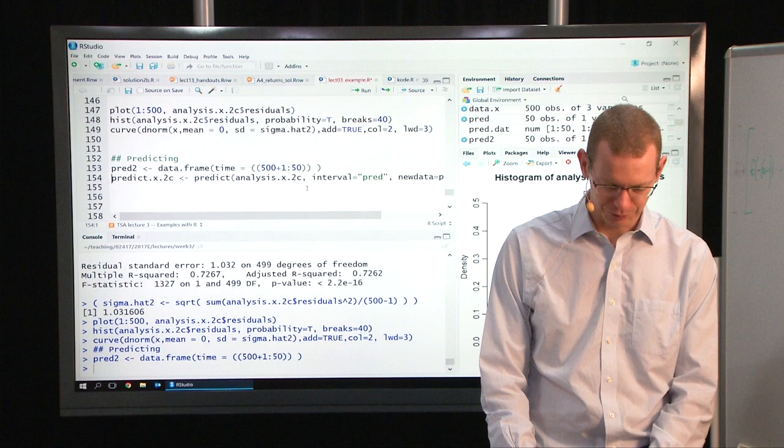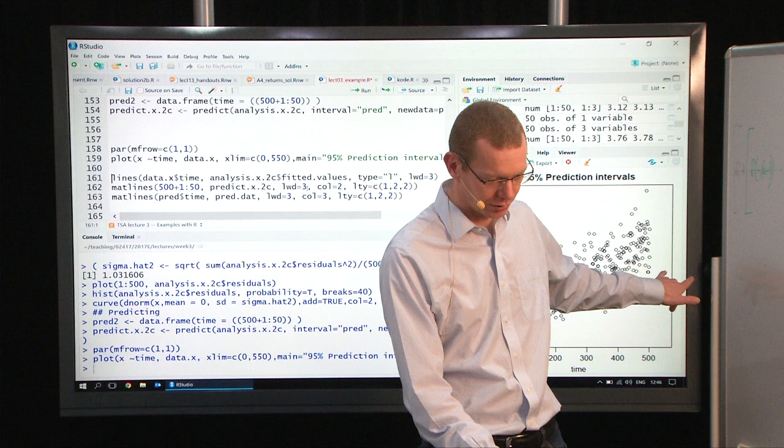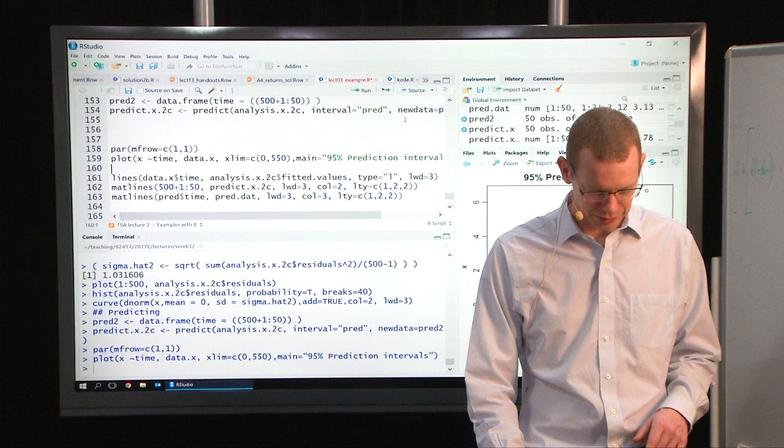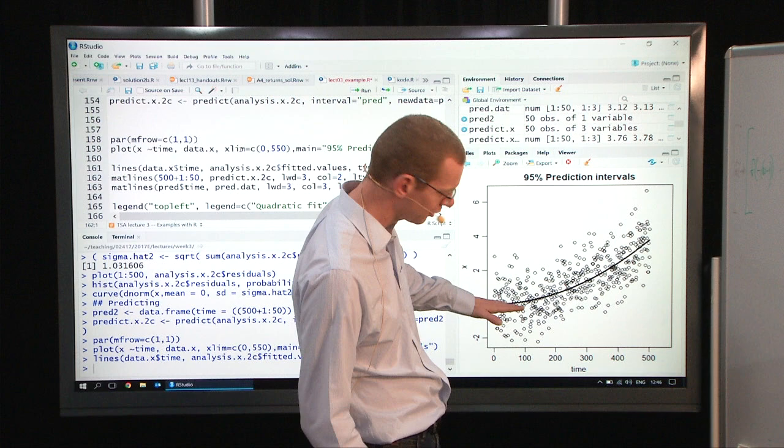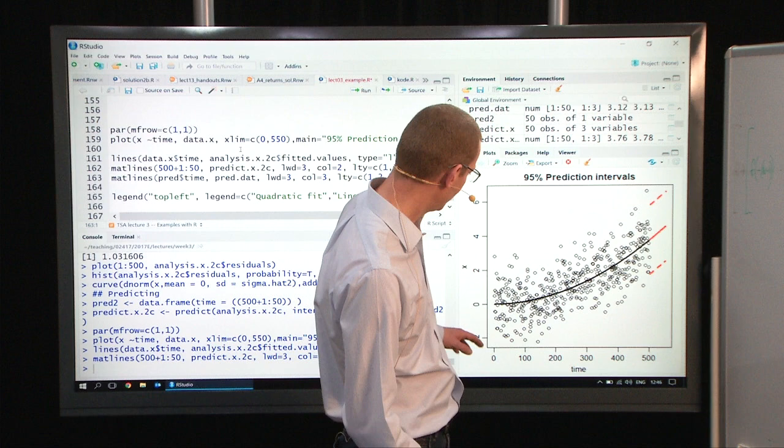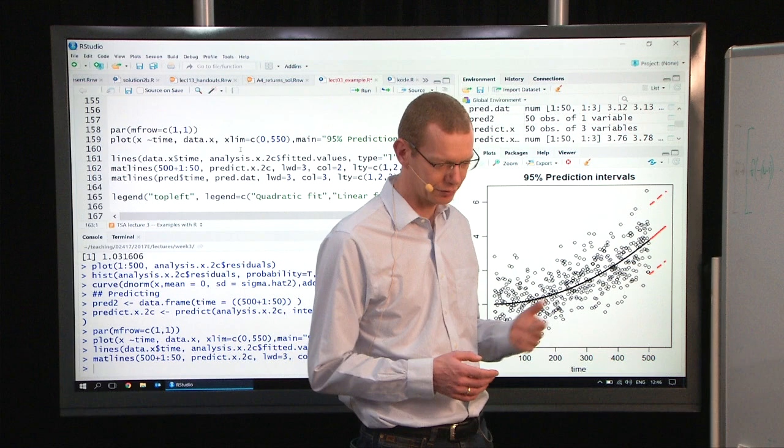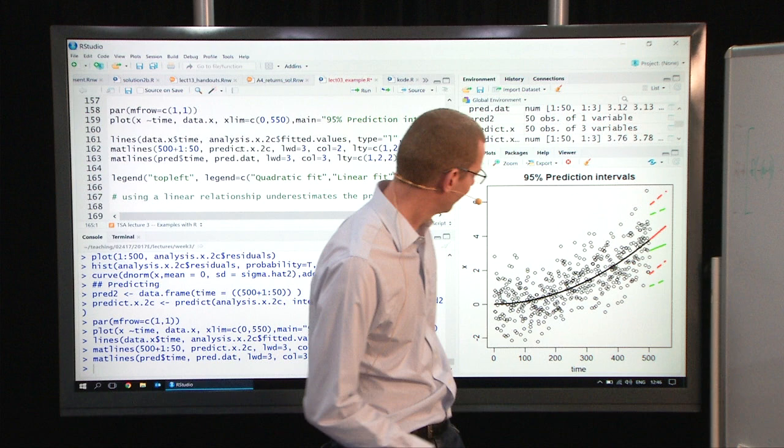Let's do the prediction again for the second-order model here, using the predict function. Plot the data again, making space out here by having x-limit to allow that. Plot the new fit here in the second-order polynomial, starts with no slope. Add what we predicted here. It looks very credible, just like it was before.